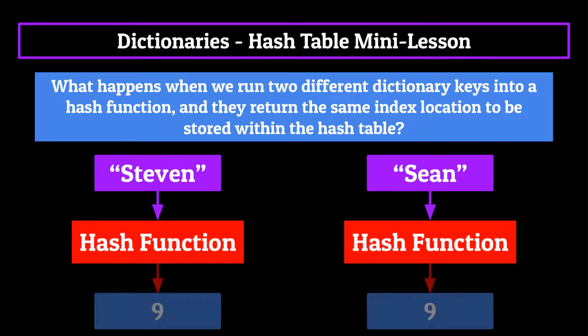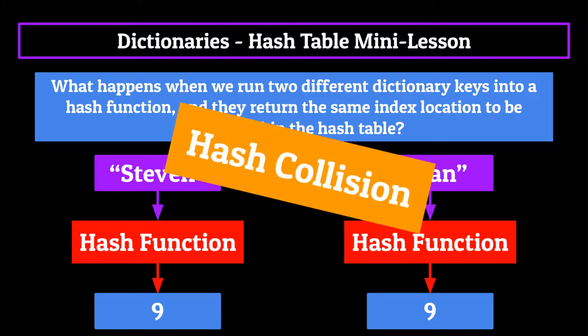We can't do that. How are we supposed to put both of them at index location nine. This is what's known as a hash collision and can be addressed in one of two ways, open addressing and closed addressing.